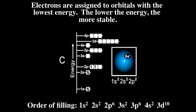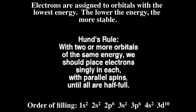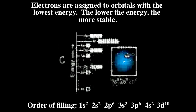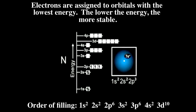With carbon, we encounter a new question: because there are three degenerate 2p orbitals — orbitals of equal energy — Hund's rule tells us that with two or more orbitals of the same energy, we should place electrons singly in each with parallel spins until all are half full. With nitrogen, we arrive at a half-filled subshell, which is associated with special stability. As we come to oxygen, having used up all vacant 2p orbitals, we must pair electrons. With neon, we reach the end of the first row and the stable octet of electrons in the outermost shell.